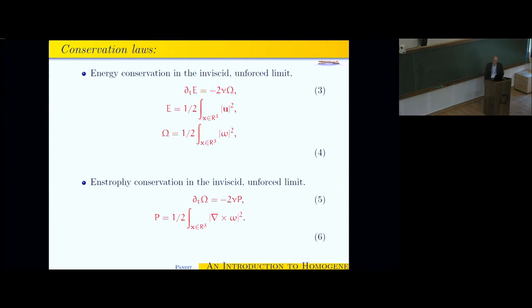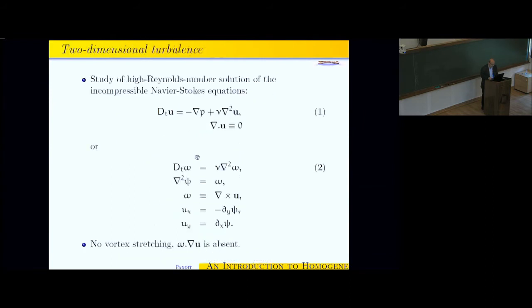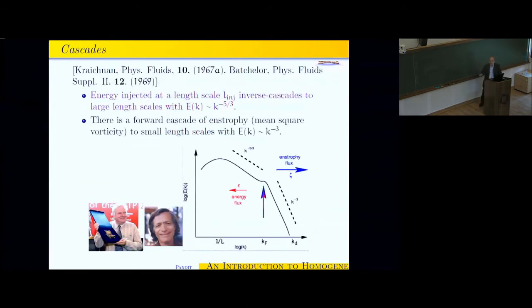Now it turns out that what I told you about the power laws in three-dimensional turbulence don't hold in two-dimensional turbulence. And one of the reasons for that, the principal reason for that is that if you look at two-dimensional turbulence in the inviscid unforced limit, the viscosity equal to zero, forcing equal to zero, in addition to the energy, which is basically mod U squared integrated over the whole volume, in addition to that, you have another conserved quantity, which is called enstrophy, which is the mod squared of the vorticity omega.